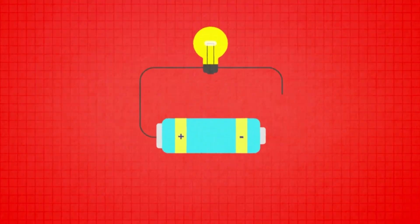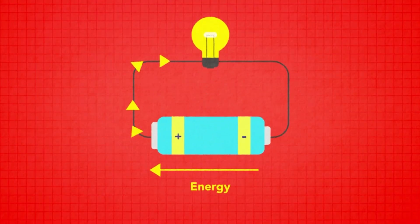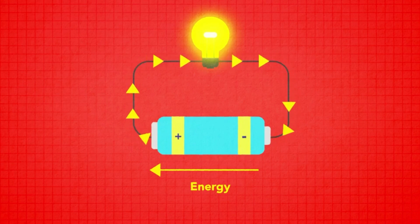Electrical energy can be transferred when an electrical circuit is completed. The internal energy stored in a battery is transferred to moving charged particles in the wire.